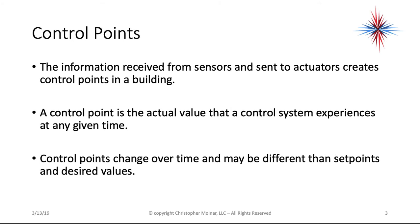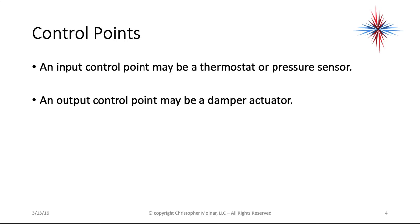Control points are information received from sensors and sent to actuators, creating control points in the building. A control point is the actual value that a control system experiences at any given time. Control points can change over time and may be different than set points and desired values. An input control point is a thermostat or a pressure sensor, collecting information and sending it to a controller. An output control point may be a damper actuator, a valve, or perhaps a fan control.